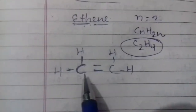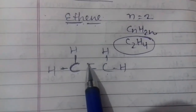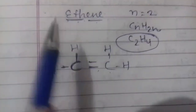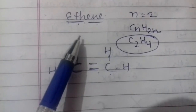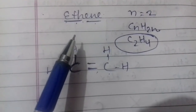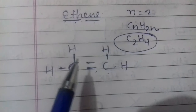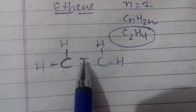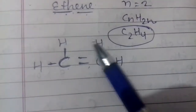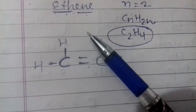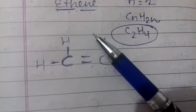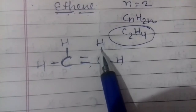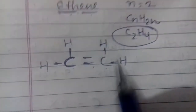Carbon 2 है, तो हम carbon के 2 symbol लिखेंगे। इनके बीच में double bond लगेगा, क्योंकि ene है, इसलिए हम double bond put करेंगे। अब इस carbon की देखिए - यहाँ पे 2 valency complete है इस bond की वजह से। Carbon की 4 valency होती है, तो 4 में से 2 minus करेंगे, तो 2 valency और बचेंगे। इसके लिए हमने 2 bond अलग-अलग करके hydrogen put कर दिया।